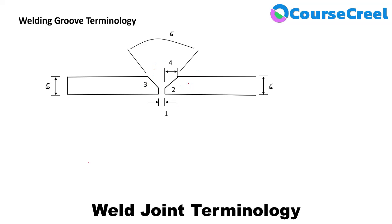First we will see the terminology of weld joint, because it is a very important part of weld joint design. If we want proper and perfect welding, our weld joint should be properly designed with proper dimensions. This particular diagram represents the welding groove terminology diagram. Here we have two components — component one and component two — which we need to join.